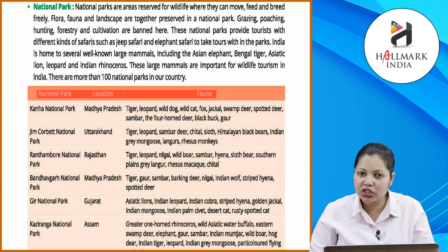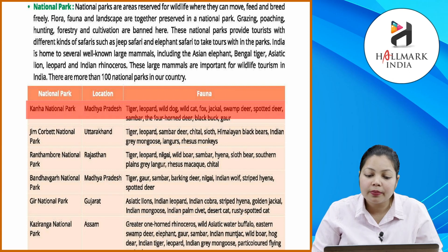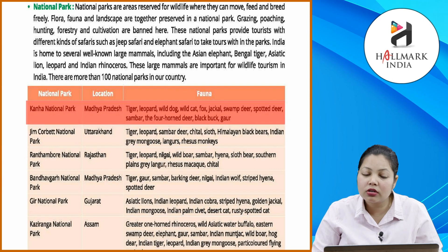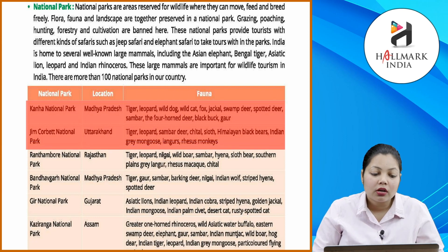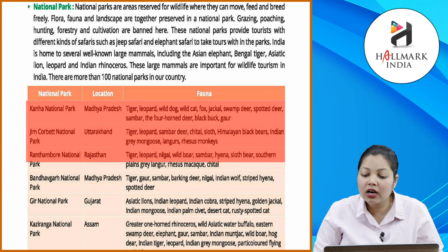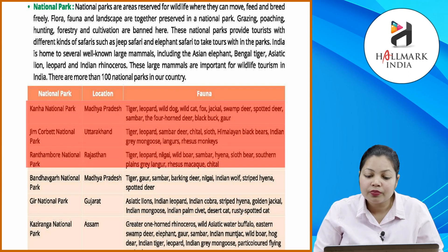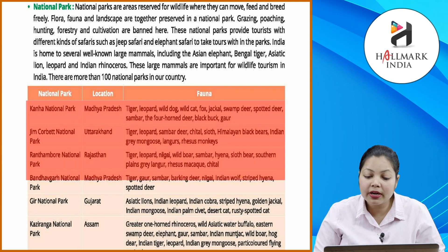Key national parks and their fauna: Kanha National Park, Madhya Pradesh — tiger, leopard, wild dog, fox, jackal, swamp deer, spotted deer, sambar. Jim Corbett National Park, Uttarakhand — tiger, leopard, sambar, deer, cheetah, sloth, Himalayan black bears, Indian grey mongoose, langurs, rhesus monkeys. Ranthambore National Park, Rajasthan — tiger, leopard, nilgai, wild boar, sambar, hyena, sloth bear, grey langurs, rhesus macaque, cheetah. Bandhavgarh National Park, Madhya Pradesh — tiger, gaur, sambar, barking deer, nilgai, Indian wolf, striped hyena, spotted deer.